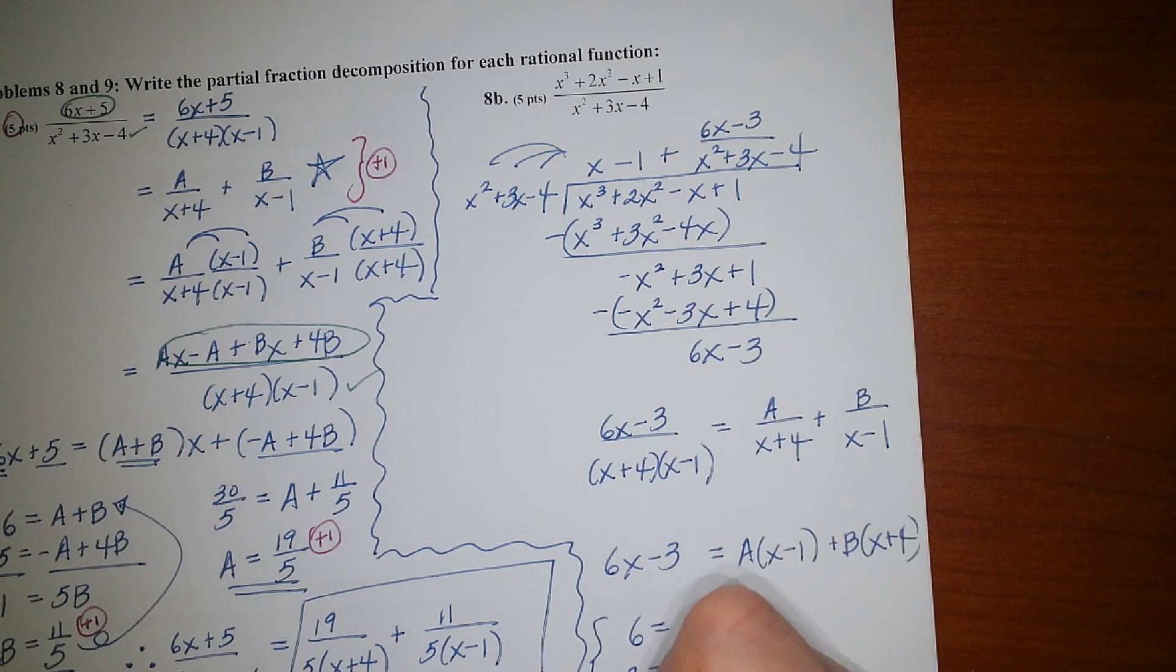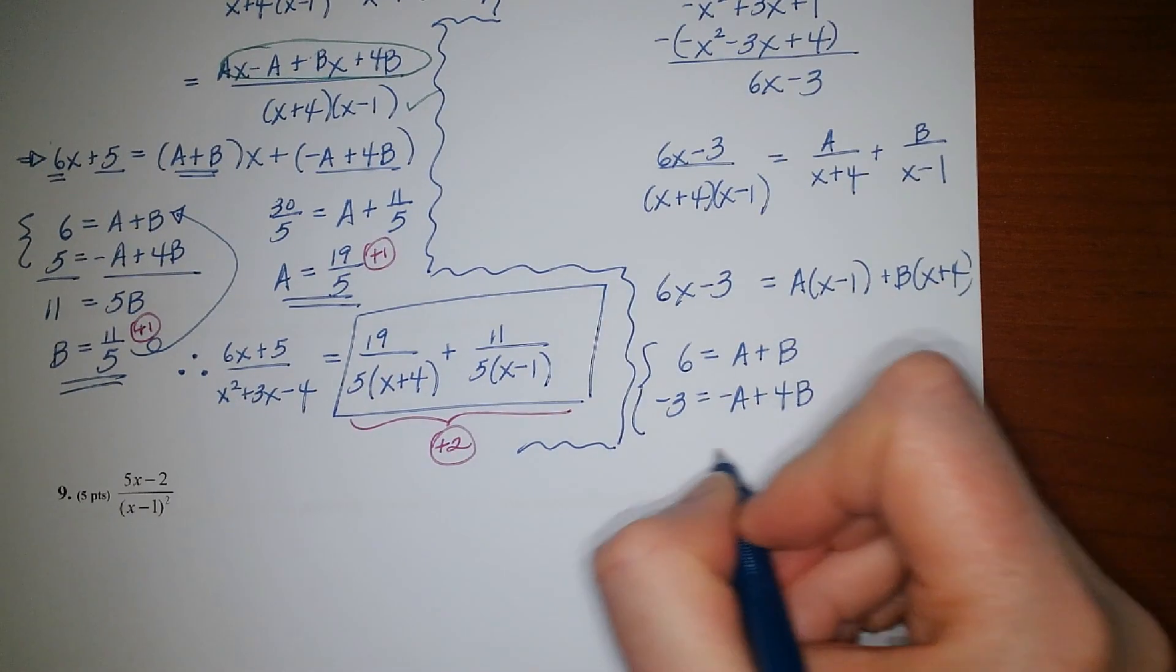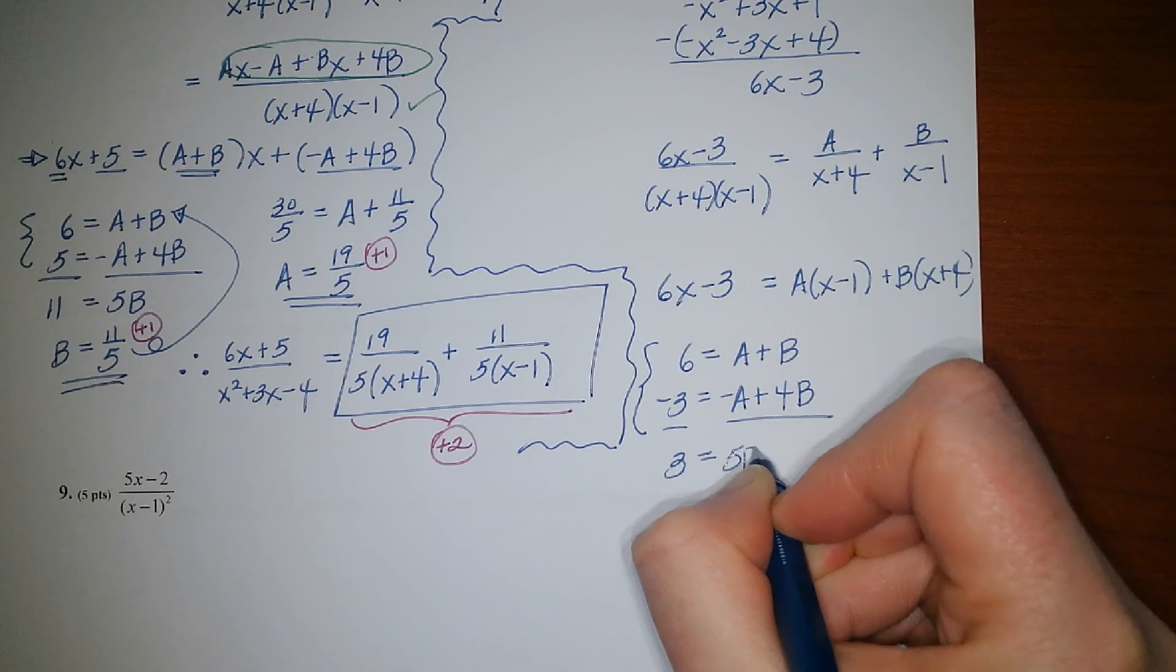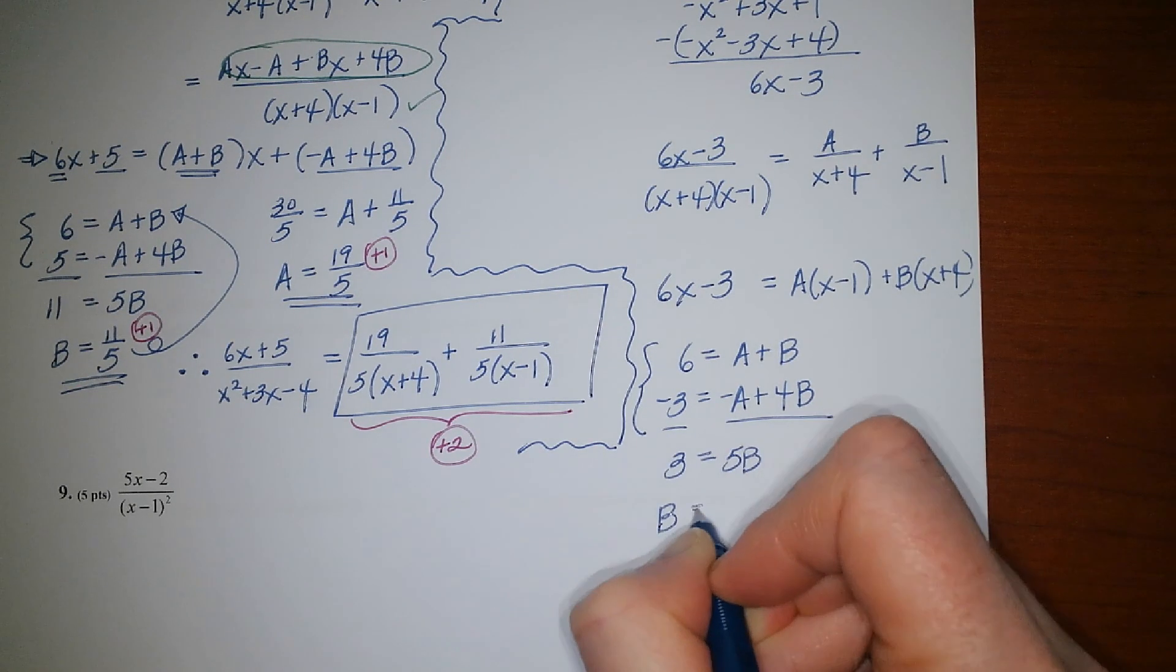Solving this system of equations, you could simply add the two rows together. You'd get 3 would equal 5b, which means b would equal 3 fifths.